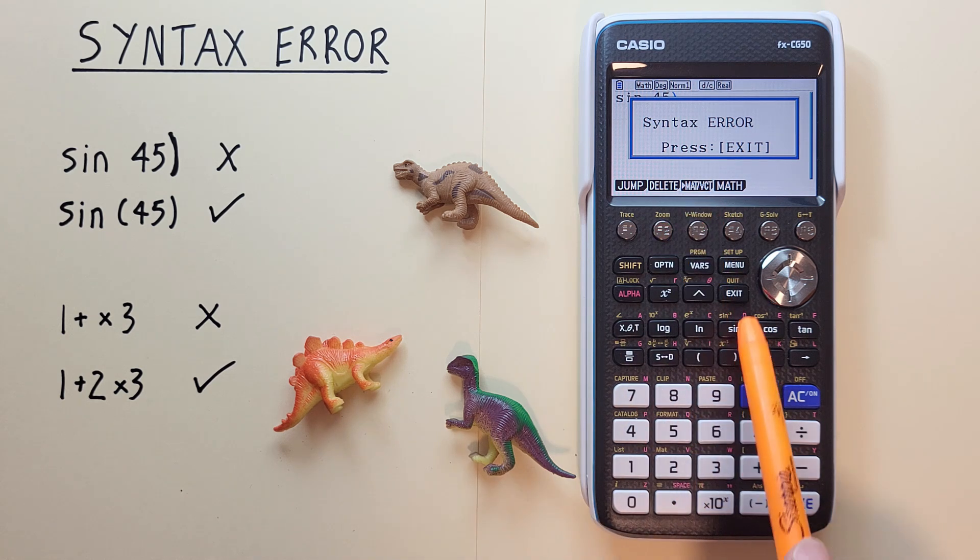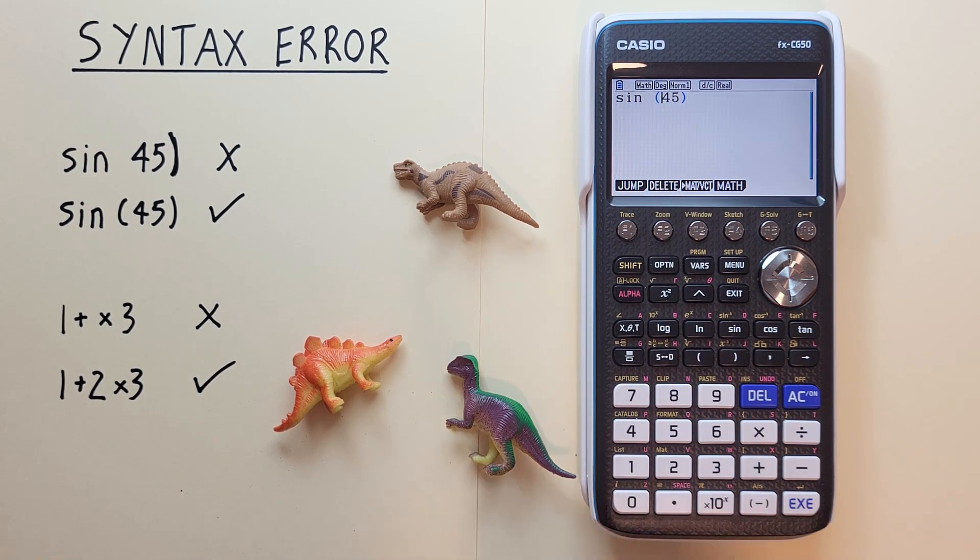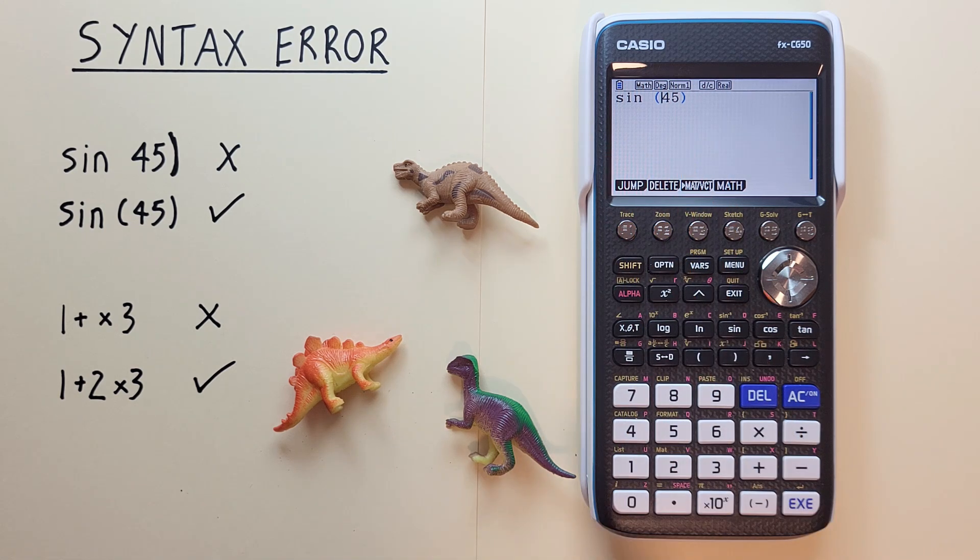So if we go back with the exit key, scroll over and enter our left bracket so that we have both brackets and now hit exe we see we get the result without the syntax error.